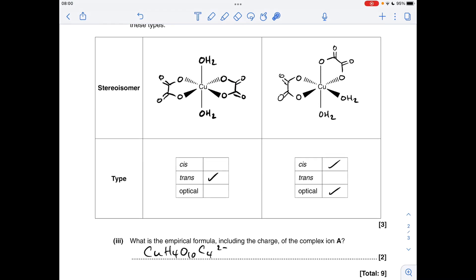And finally, the empirical formula, including the charge of complex ion A. So you can have the atoms in any order, just so long as the right numbers are after them. The charge, I'll just quickly explain that. So we're told that it's copper 2+, each of these bidentate ligands have a 2- charge. Remember, water doesn't have a charge, so the overall charge is going to be 2-.